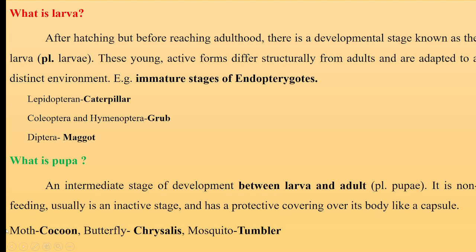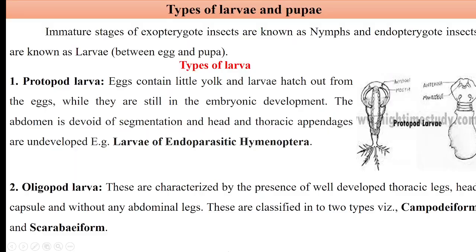The pupae of different insects is also known by different names. Moth pupae is known as cocoon — like the silkworm cocoon. Butterfly pupae, which is naked or bare, is known as chrysalis. However, mosquito pupae, that is an active pupae, is known as tumbler.